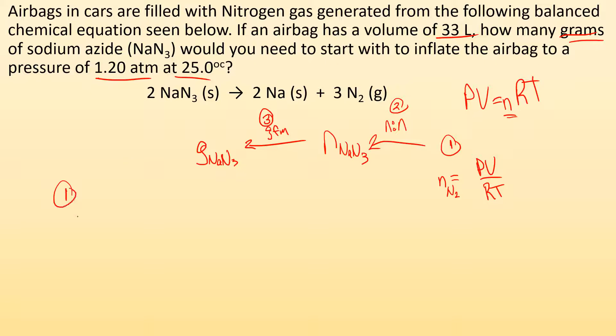So first step, I know moles of N2 is going to equal the pressure, which they told me is 1.20 atmospheres times the volume, which they told me is 33 liters, all over RT. Now R for the atmospheres is 0.08206 liters atmospheres over mole Kelvin times the temperature in Kelvin. It has to be in Kelvin. So it's going to be 298. So 25 degrees Celsius plus 273 gives me the Kelvin temperature.